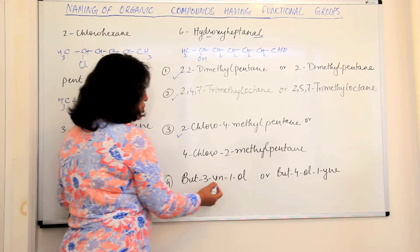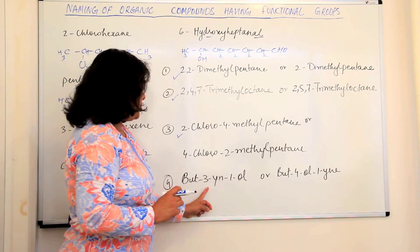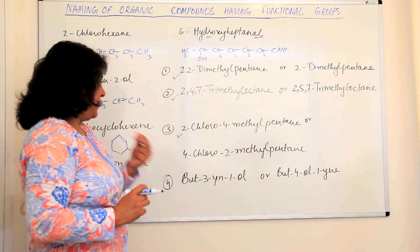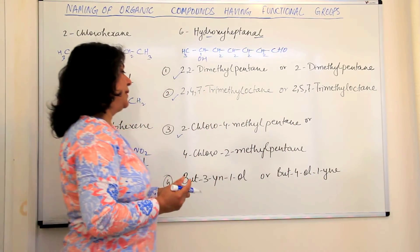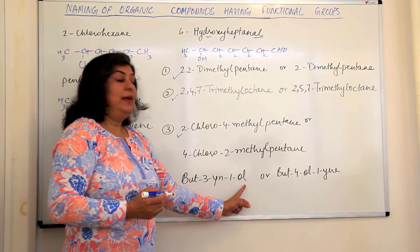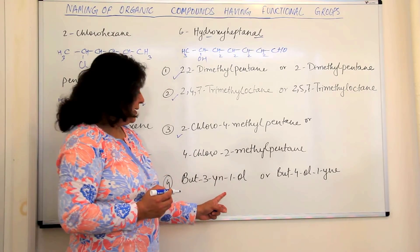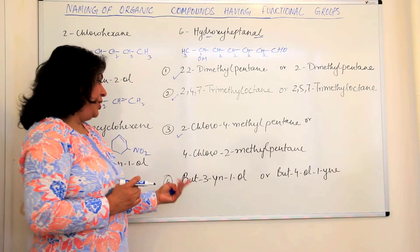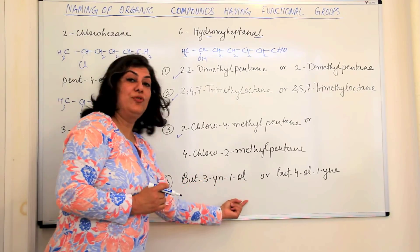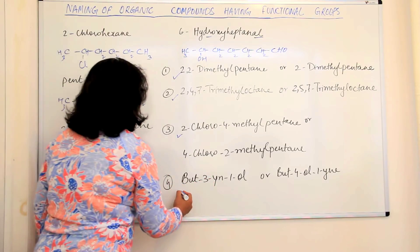Then you have but-3-yne-1-ol and but-4-ol-1-yne. Alcohol is a functional group while yne is only unsaturation. So yne should come before the functional group. Therefore, this name should be correct.